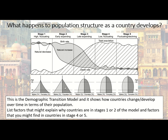As countries move into stage three, you start to see a reduction in birth rate. The birth rate is starting to come down due to things like contraception and less infant mortality. That changes the overall shape of the pyramid. Far more people are surviving past 65, and you can see there's more bulk to the pyramid above that line than in the previous two stages.